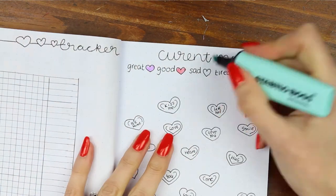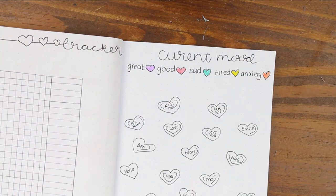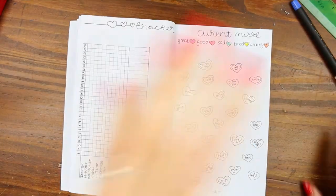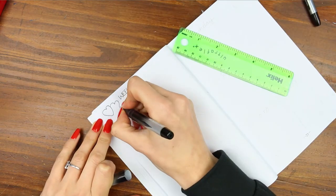Then I just went back and added the colors at the top to my key so I know what color goes with what mood. And probably most of these are going to be yellow because I also have anemia so I am always tired.